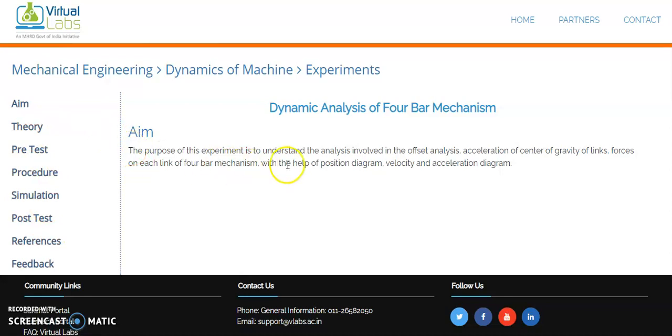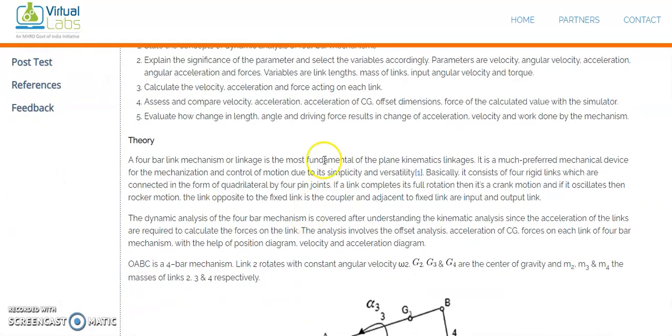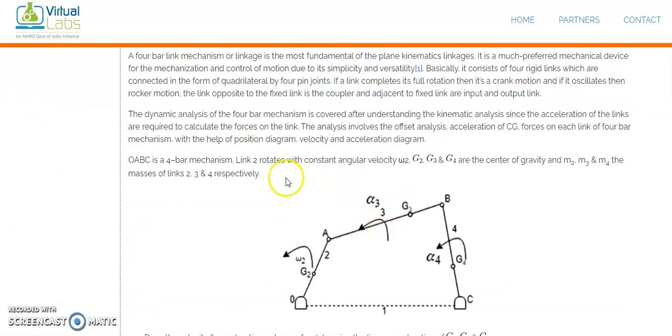One by one, we have to cover this. This is the aim: the ultimate purpose of this particular experiment is to understand the analysis involved in velocity, acceleration of center of gravity of the links, and forces on each link of four bar mechanism with the help of position diagram, velocity and acceleration diagram.